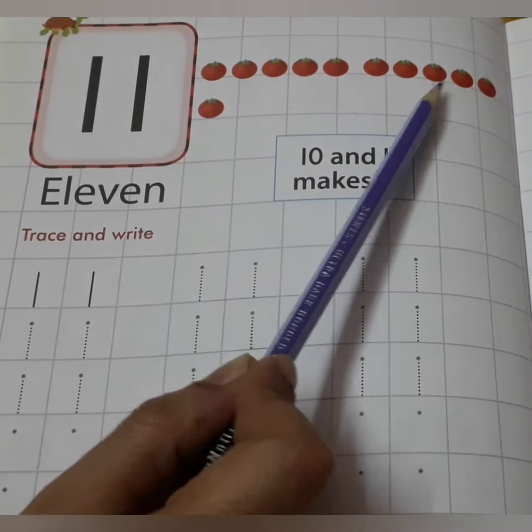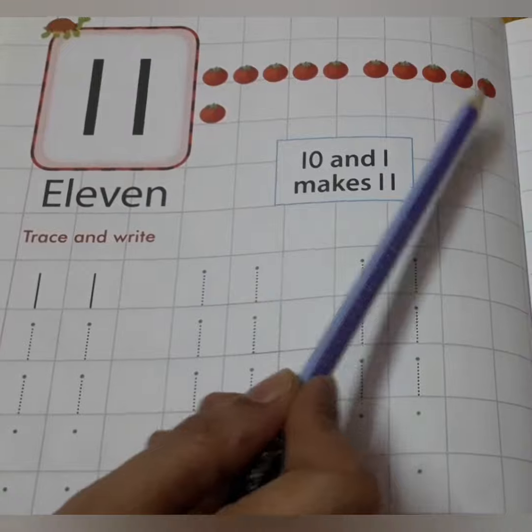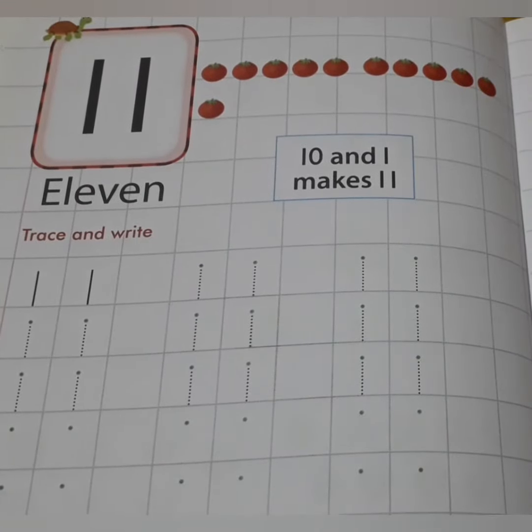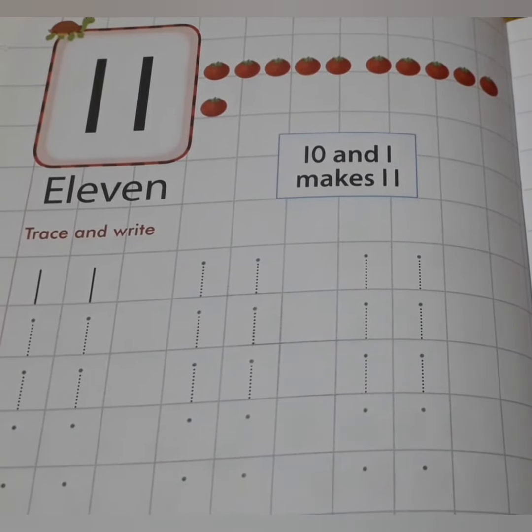6, 7, 8, 9, 10, 11. How many tomatoes are there? 11 tomatoes.